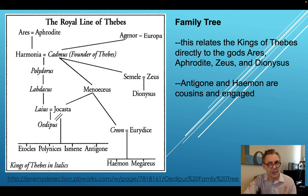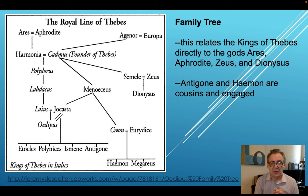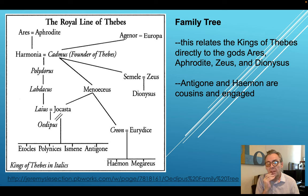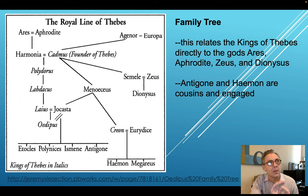Jocasta is Cadmus' granddaughter. Laus, if we trace this back, is Cadmus' great-grandson, and these two marry. So somehow there are some age differences going on here. Menaceus also had the son Creon, so Jocasta and Creon are brother and sister. Laus and Jocasta have one son, Oedipus. Because of what Laus and Jocasta are told when Oedipus is born — which is part of the story of Oedipus Rex, not Antigone — a seer tells them that their son Oedipus will be the ruin of them.